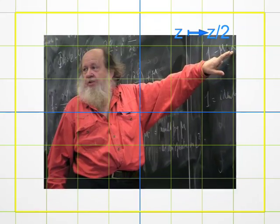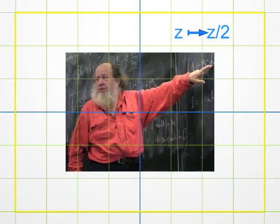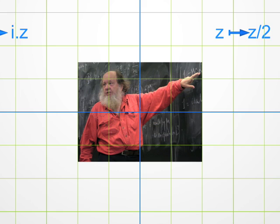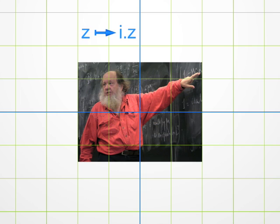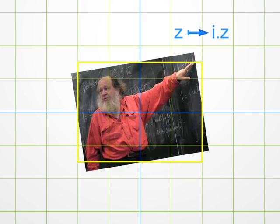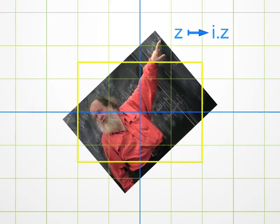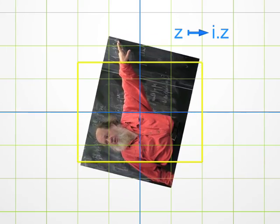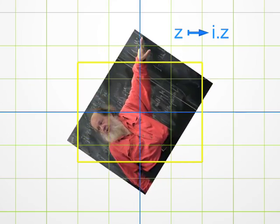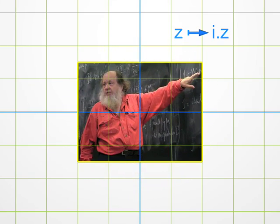This transformation is called a homothety. Let's go to the multiplication by i. Easy! We know that multiplying by i is just a quarter turn. Note that the modulus does not change, but the argument increases by 90 degrees. Indeed, this is quite a sophisticated way of saying that we just rotated the picture.